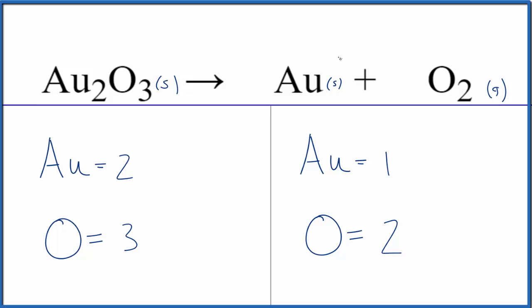Let's take and leave the gold here until last. It's by itself, so if we change this coefficient, that won't change the number of oxygens. For oxygens, it's probably best to try to get this to an even number.